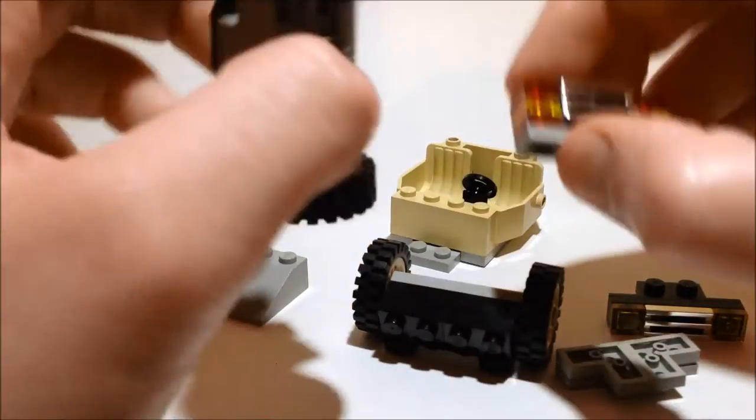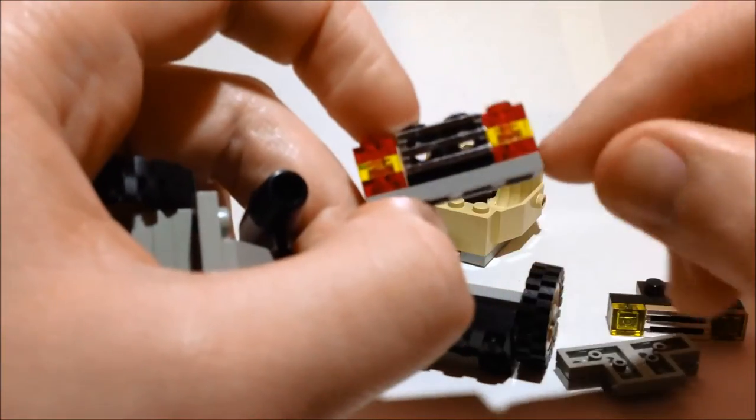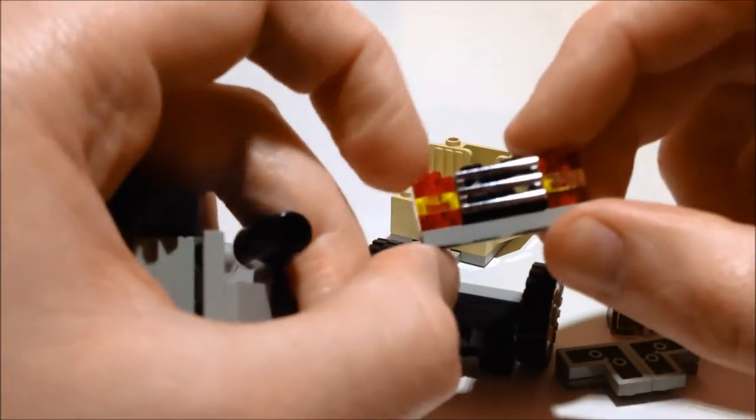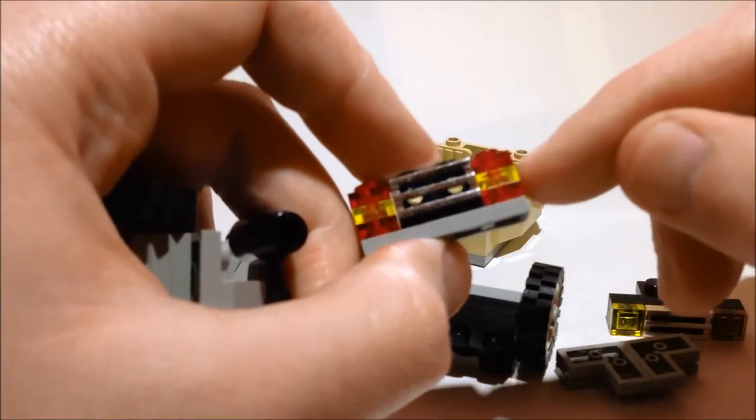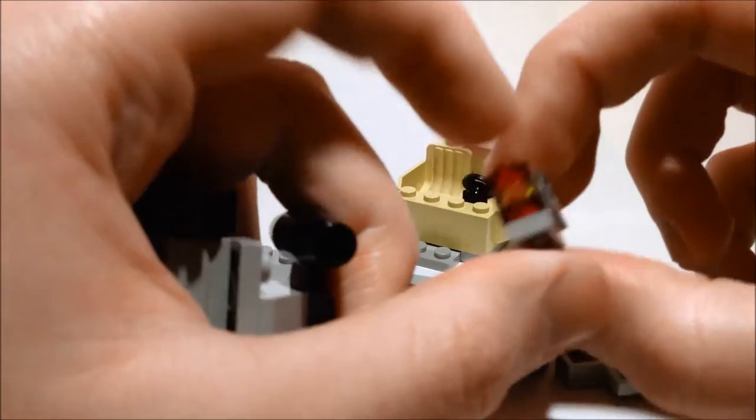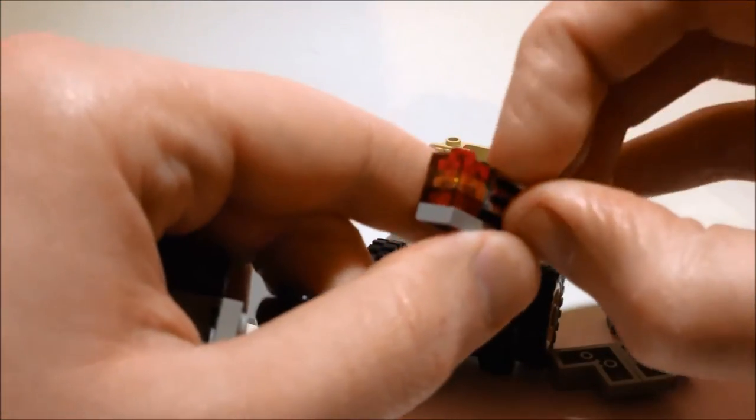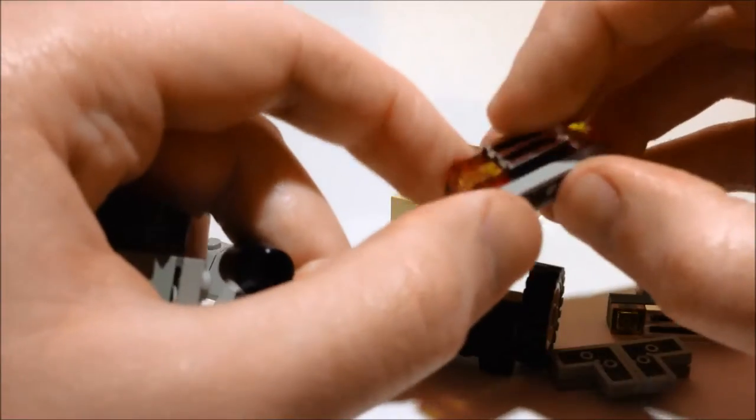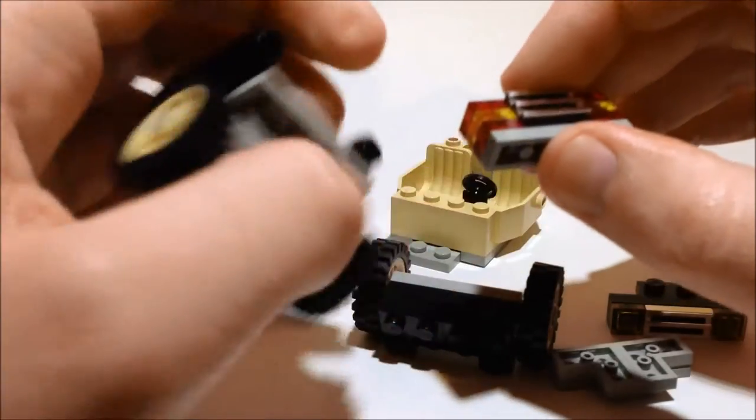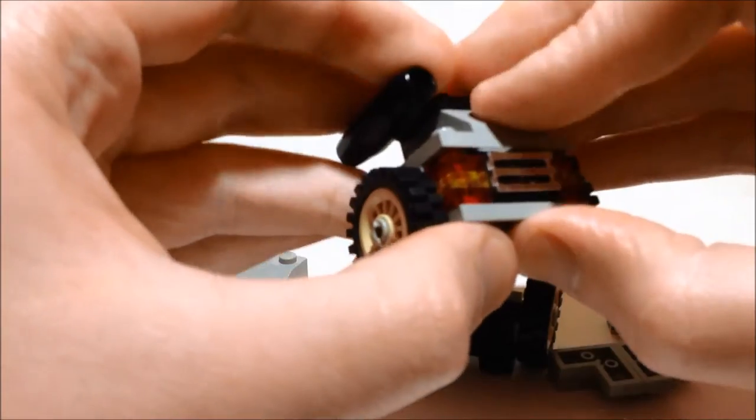On the back here goes this piece which is two bricks on each side stacked up with red, yellow, and red transparent bricks and two black headlight bricks with a chrome grill and a 1x4 plate underneath, and that goes right here.